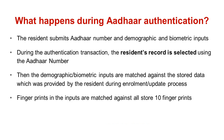Now let me explain what happens during Aadhaar authentication. The resident submits Aadhaar number and demographic and biometric inputs. During the authentication transaction, the resident's record is selected using the Aadhaar number submitted by the resident. Then the demographic and biometric inputs are matched against stored data which was provided by the resident during the enrollment or update process. Fingerprints in the inputs are matched against all stored 10 fingerprints of that resident.